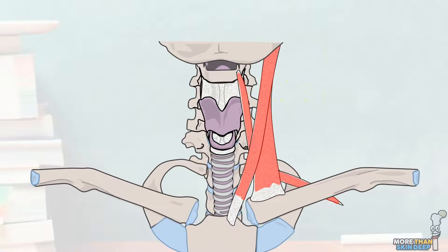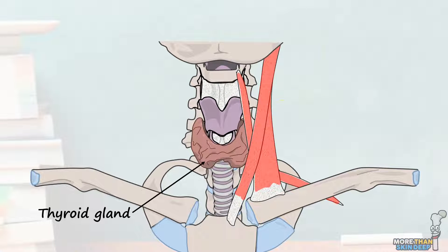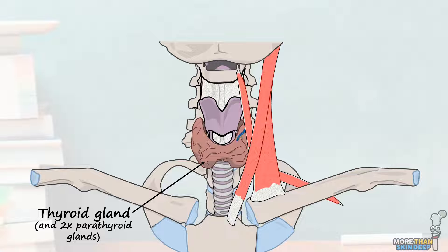Important contents of the muscular triangle include the lateral lobe of the thyroid gland, which lies behind the aforementioned muscles, and two posterior parathyroid glands which accompany the thyroid on either side.